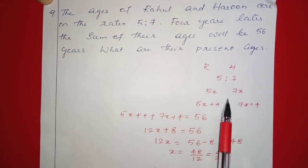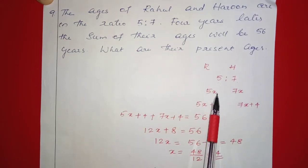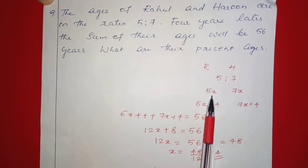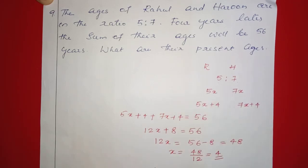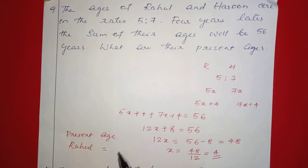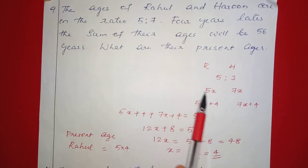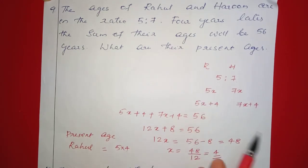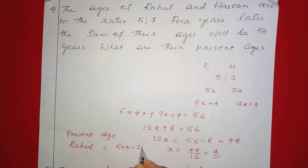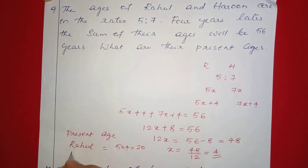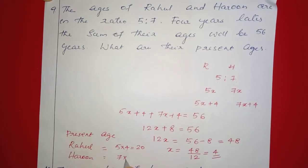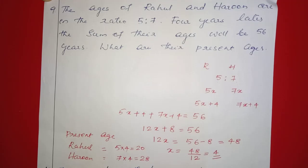So x equals 4. Rahul's present age is 5x, that is 5 times 4 equals 20. Harun's present age is 7x, that is 7 times 4 equals 28.